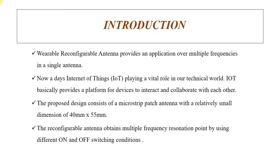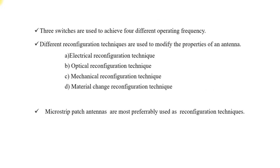We use a diode as a switching device. When the diode is turned on, the antenna provides one particular resonant frequency. When the diode is in the off condition, it provides a different resonant frequency. This is how frequency reconfiguration is achieved by the introduction of diodes. Three switches are used to achieve four different operating frequencies in this design.